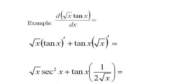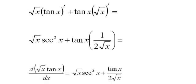We end up with this expression, the square root of x times secant squared x plus the tangent of x times one over two times the square root of x. I can bring the tangent up on top here, and we have our solution.